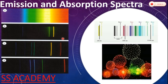Line spectra are used to identify elements and hence to deduce which elements are most commonly present in the stars. Absorption spectra are very useful for astronomers. The absorption lines in the spectrum of a star or galaxy give us a fingerprint of the elements present. If the Doppler effect shifts this fingerprint to a longer wavelength, we can calculate how fast the star or galaxy is moving away from us.